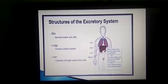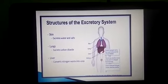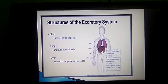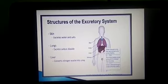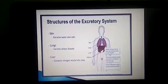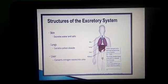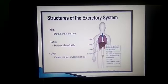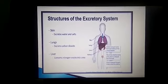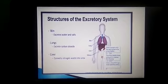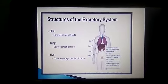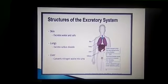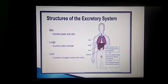Sweat glands in the skin are primarily concerned with cooling the body. The sweat secreted also carries a small amount of nitrogenous waste. Sweat glands pass out sweat only when required for cooling, so truly they are not excretory organs. The liver converts nitrogenous waste into urea.